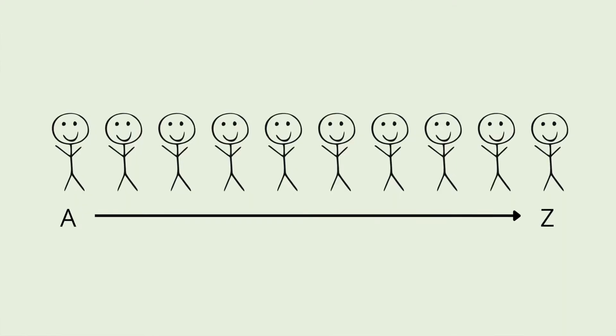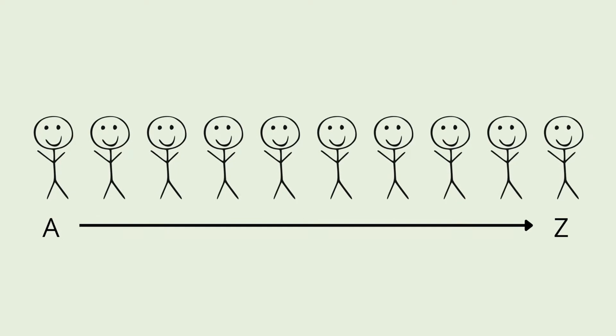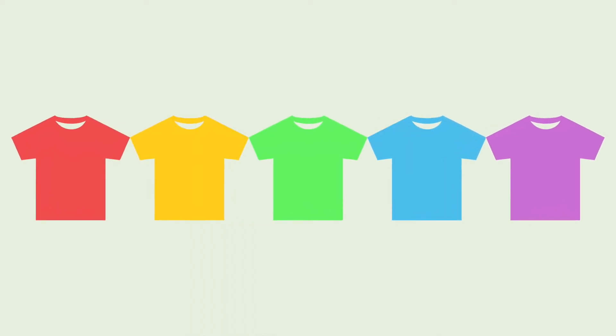You can also have students line up in a different order — alphabetically based off of their first name, or in rainbow order based on what color shirt they're wearing. The catch is students will have to play this game silently, which means they're going to have to come up with creative ways to communicate with each other. This makes the game extra challenging and extra fun. It will require them to use their problem solving skills, their communication skills, and to figure out a strategy to line up in the correct order.